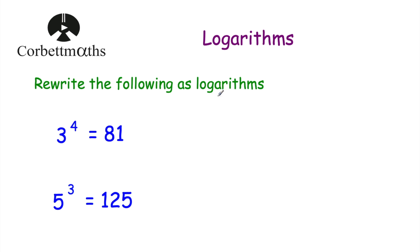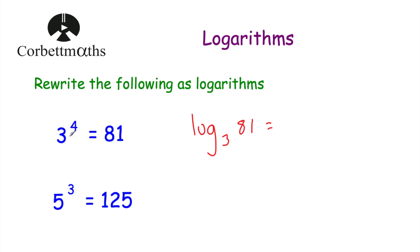We've been asked to rewrite the following as logarithms. We've got 3 to the power of 4 is equal to 81. So we're going to have log to base 3 — because the base is 3 — of 81. What would the power be? The power would be 4. So log to base 3 of 81 is equal to 4. That's how we've written this as a logarithm.